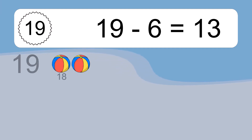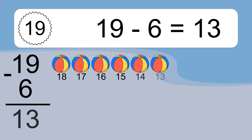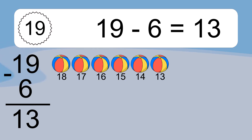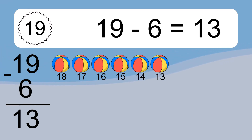19 minus 6 equals 13. Let's count it: 18, 17, 16, 15, 14, 13.